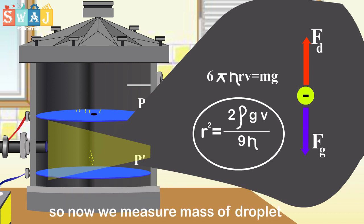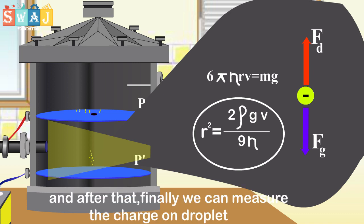So now we can measure mass of droplet. And after that, finally, we can measure charge on droplet.